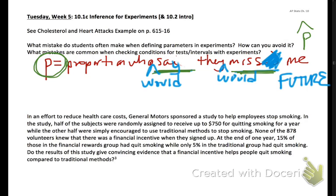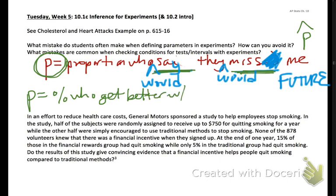In an experimental context, if we let the proportion be the percentage who get better with the pill — whatever the pill is in the experiment — we should say 'the percent who would get better if they would take the pill,' rather than 'the percent who got better when they took the pill.' That past-tense phrasing refers to the sample that was taken, not to the future population of people who could take the pill.